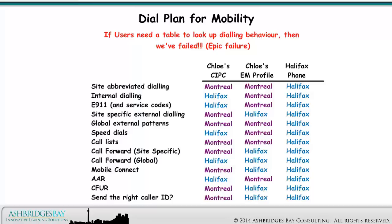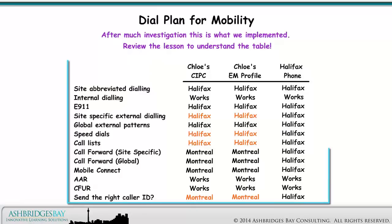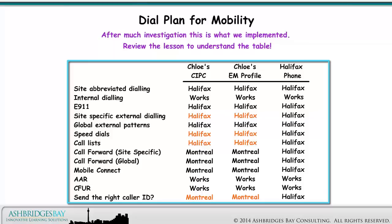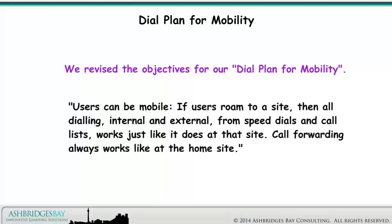This has to be as simple as possible. After much investigation, this is what we implemented — review the lesson to understand the table. We revised the objectives for our dial plan for mobility: users can be mobile. If users roam to a site, then all dialing, internal and external, from speed dials and call lists, works just like it does at that site. Call forwarding always works like at the home site.